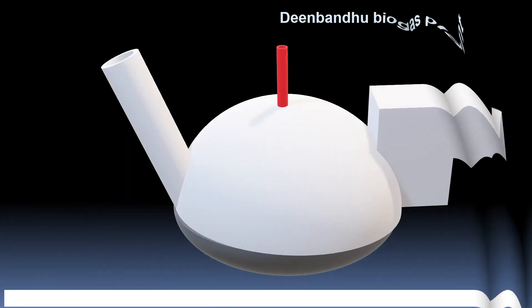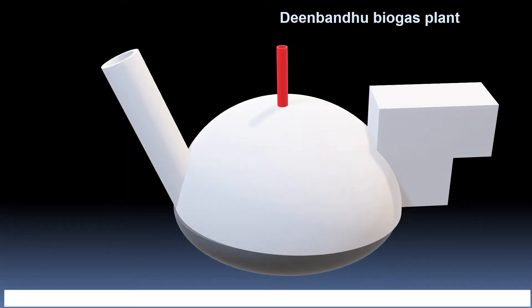Deenbandhu biogas plant is a type of fixed dome biogas plant. First, let's see this 3D model and then we can understand its 2D diagram and working in a better way.